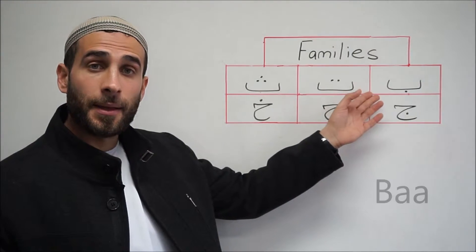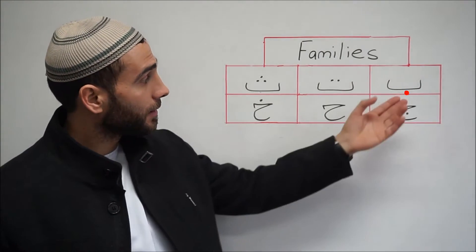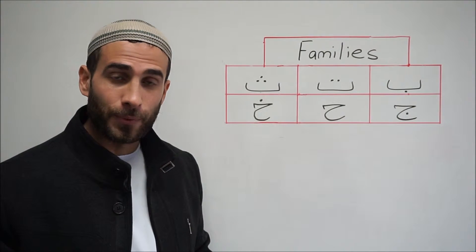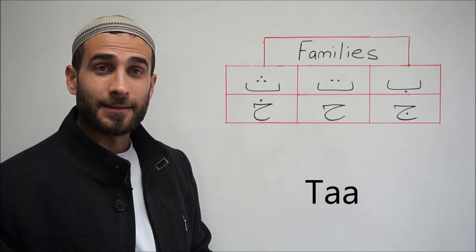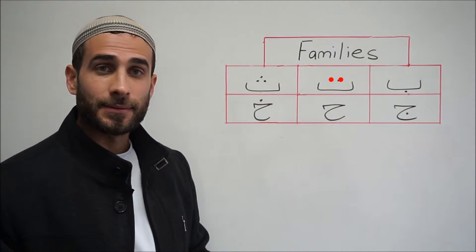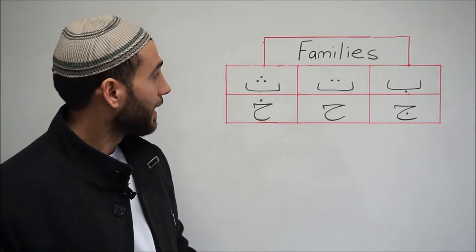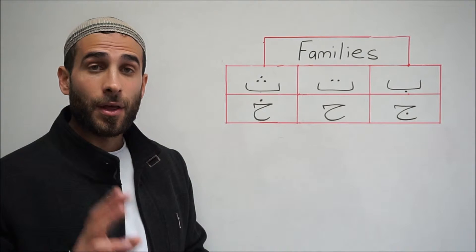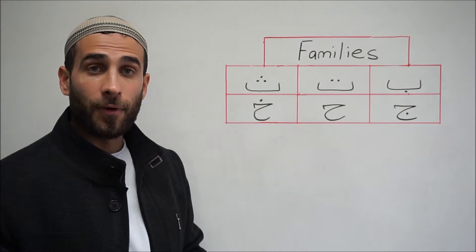This letter is a BA. It has one dot that sits below it. BA for below. The next letter is a TA. It has two dots that sit on top of it. TA for two. The next letter is a TH. It has three dots that sit on top of it. TH for three.